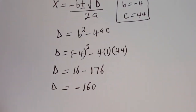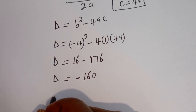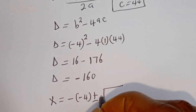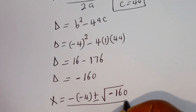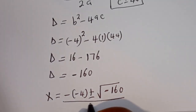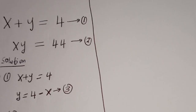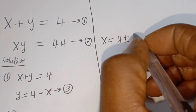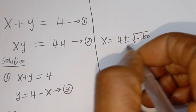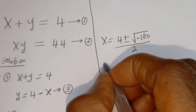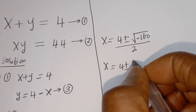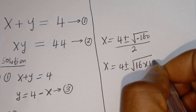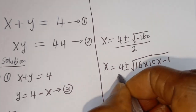Now let's plug this into the formula. x is equal to minus (minus 4) plus or minus square root of minus 160, all over 2 multiplied by 1. This simplifies to x equals 4 plus or minus square root of minus 160 over 2. The square root of minus 160 can be written as square root of (16 multiplied by 10 multiplied by minus 1) over 2.